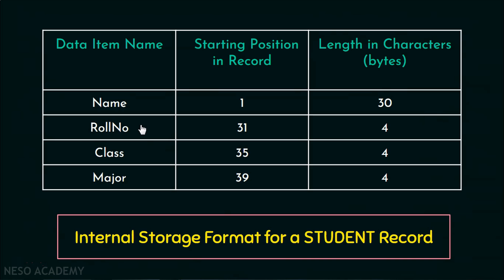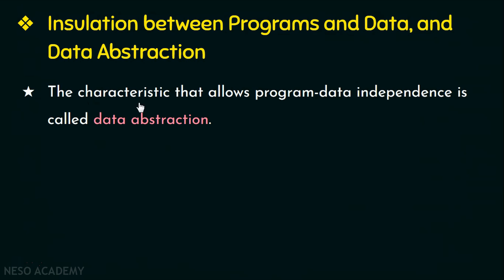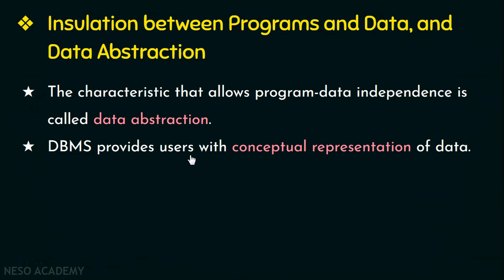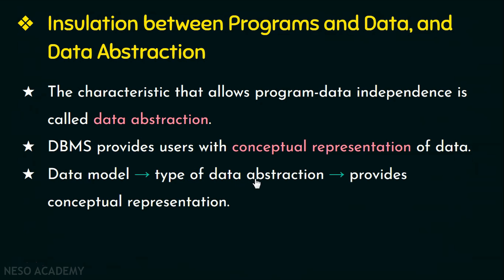So that is called program-data independence. The characteristic that allows program-data independence is called data abstraction. DBMS provides users with a conceptual representation of data — that is, it hides the behind-the-scenes or complicated details that are not of interest to the database user. A data model is a type of data abstraction that provides conceptual representation to database users in a way that most users can understand, and the data model hides the storage and implementation details from the users.